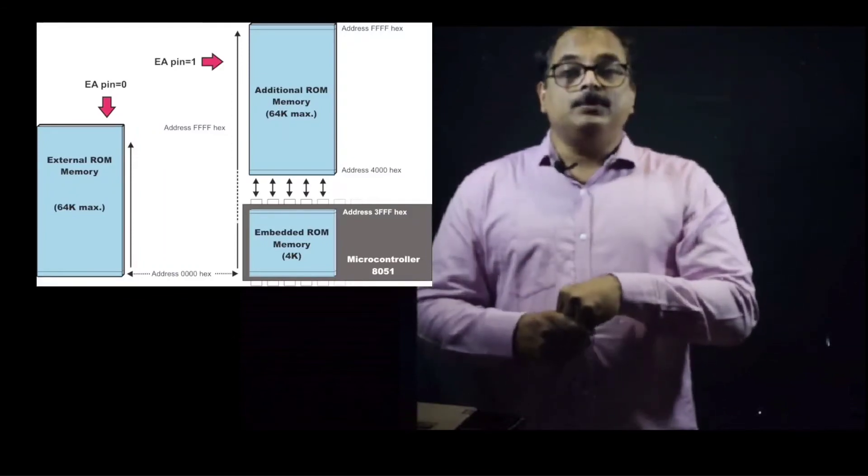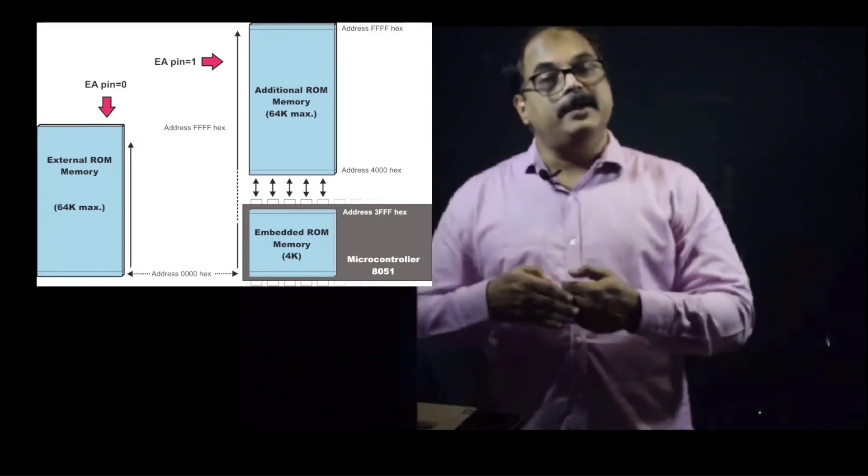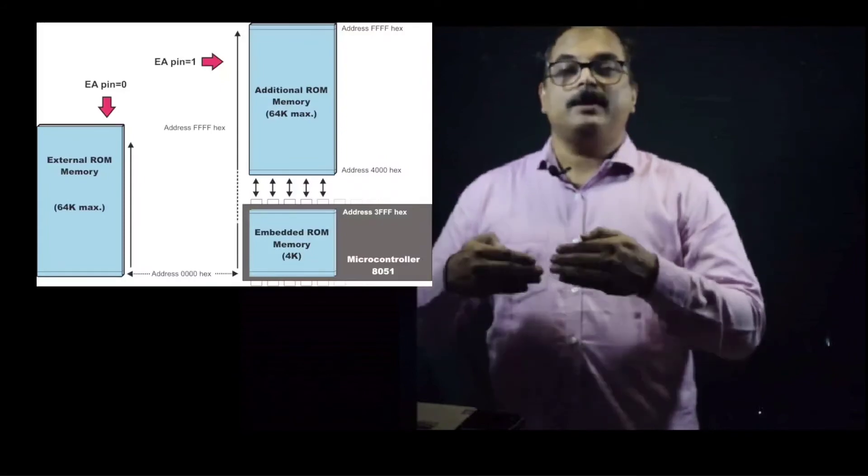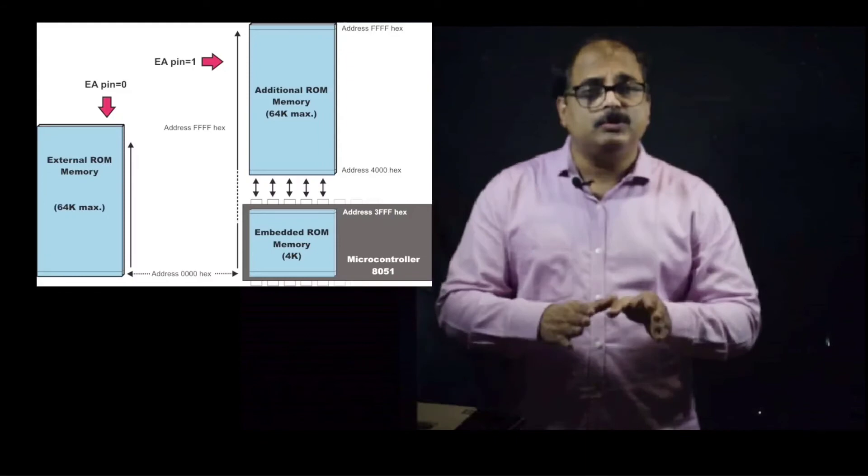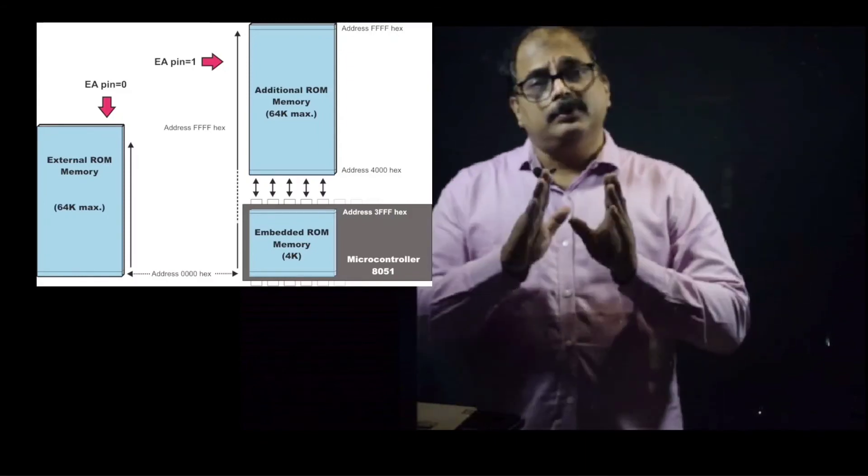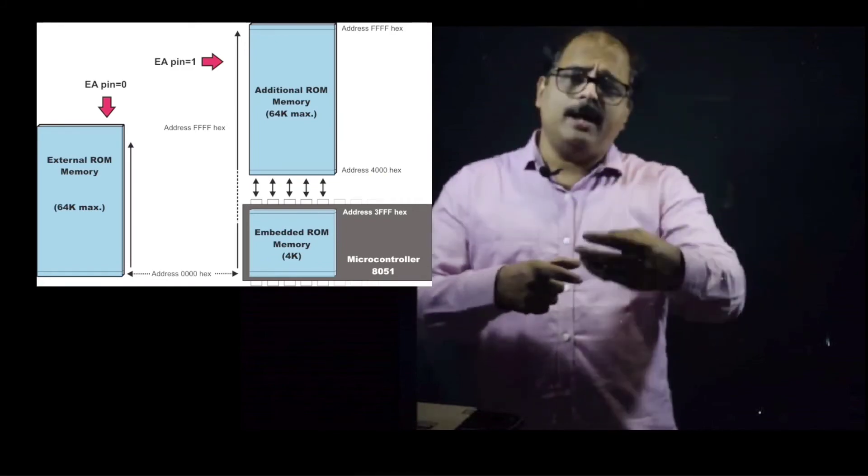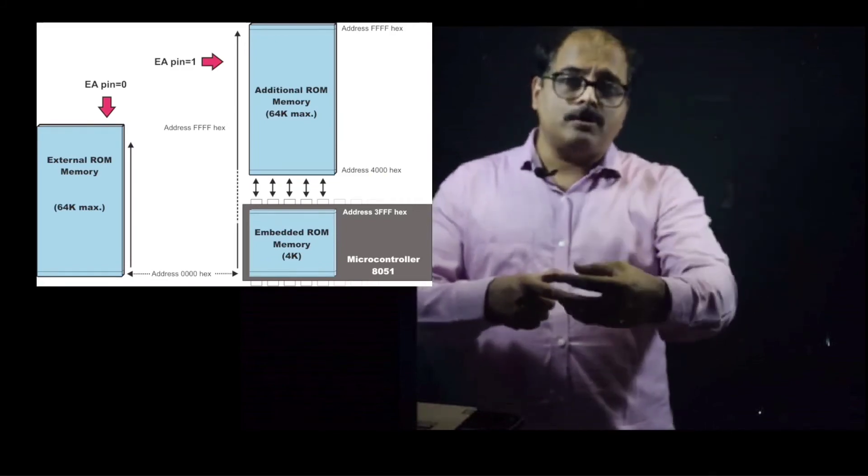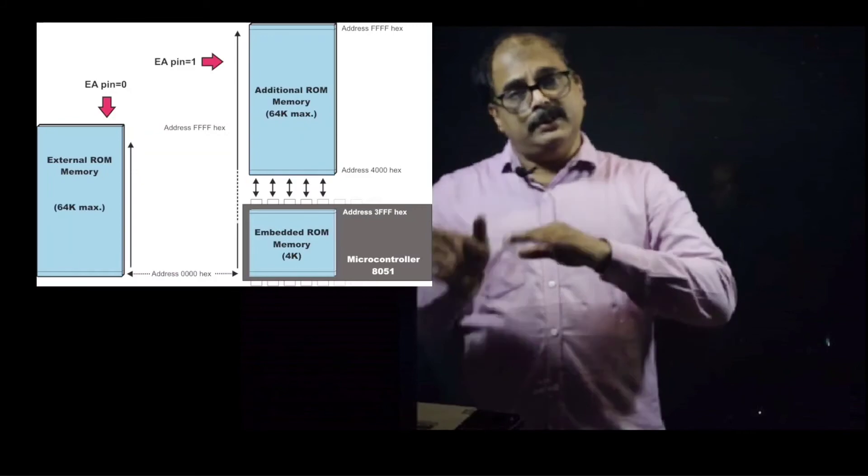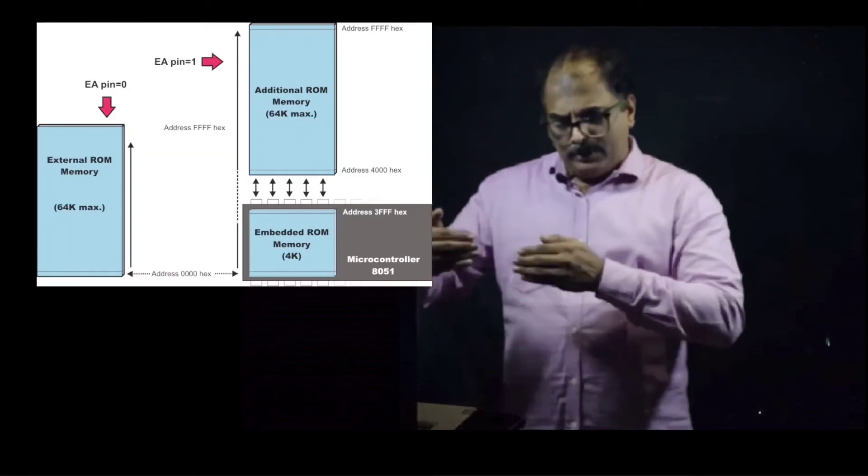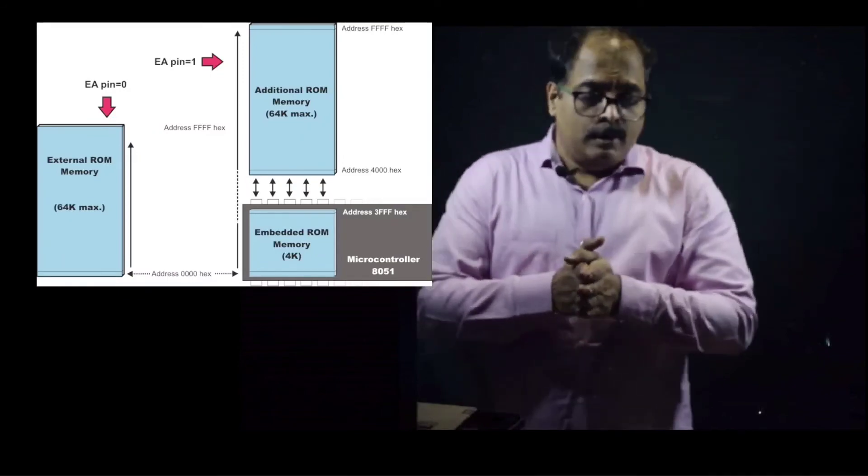As you have already studied, to 8051 we can interface maximum 64 KB memory. That means you can have external memory connected to 8051, that is maximum up to 64 KB. So 4KB ROM is there inside, you can have 60K more ROM connected from outside, so total maximum 64K you can go. Or you have other option to connect full 64 KB memory externally to this 8051 microcontroller. But since in this lecture we will not see that interfacing because we are today discussing about the internal memory organization of 8051 microcontroller.